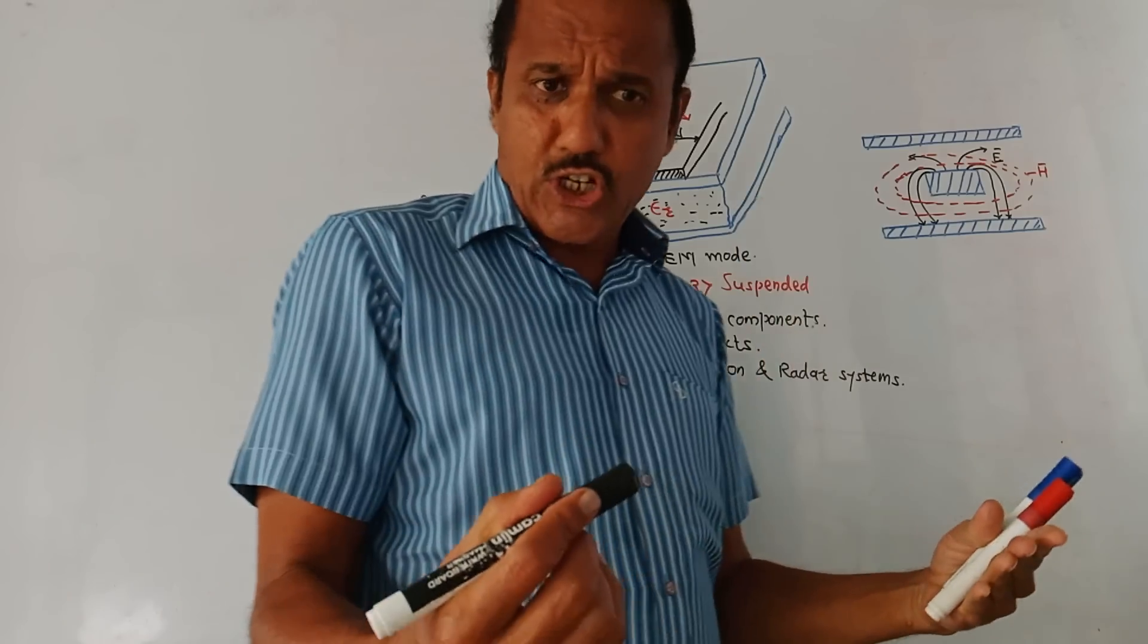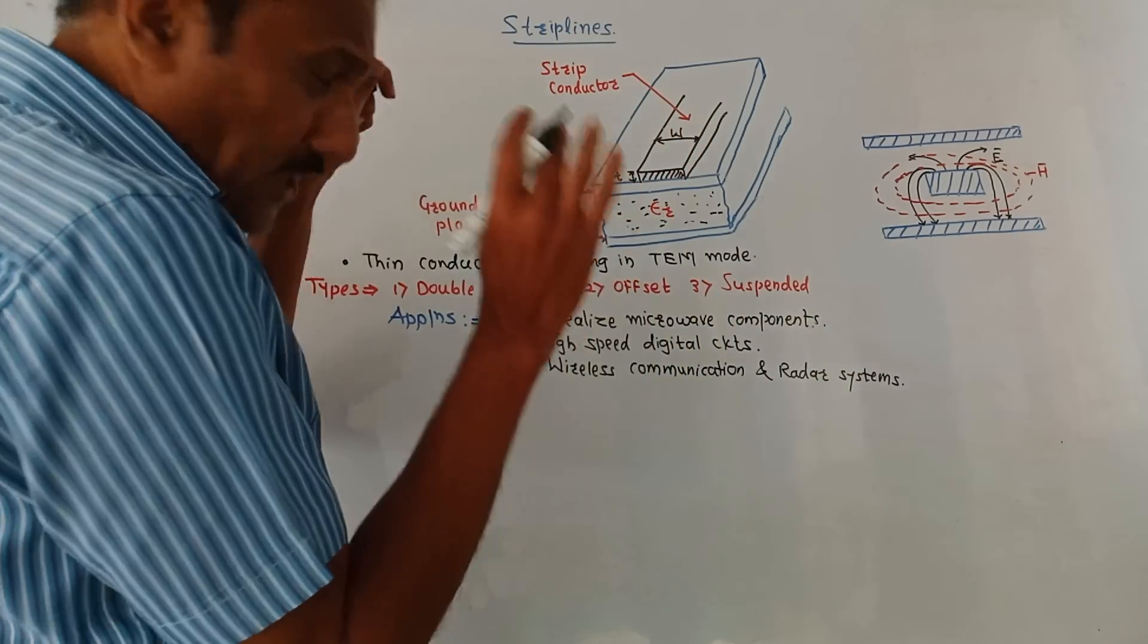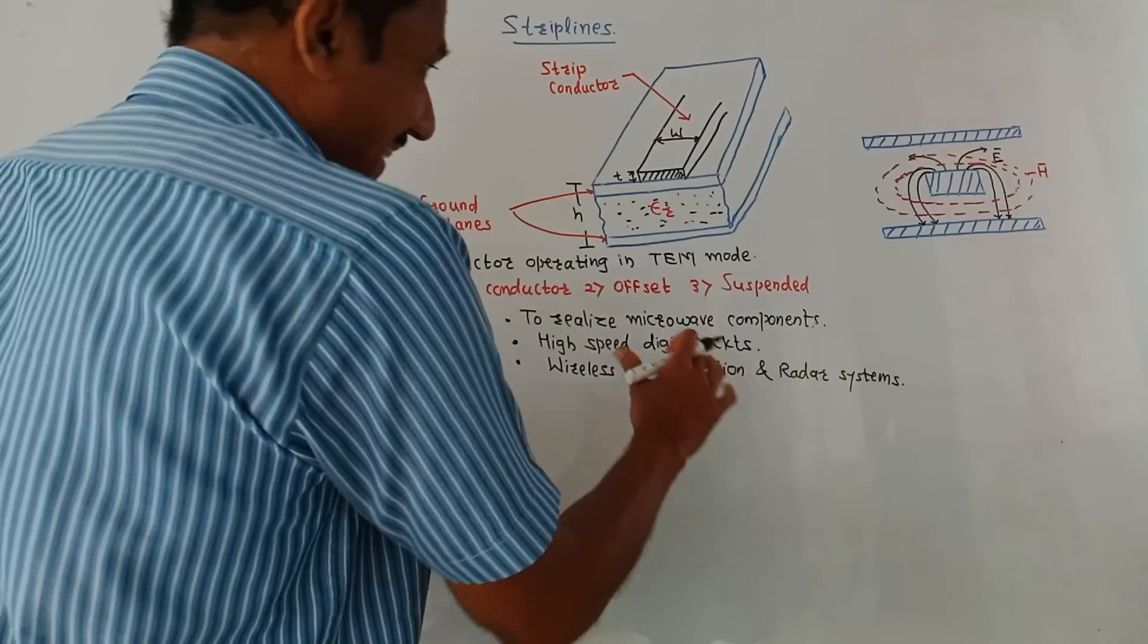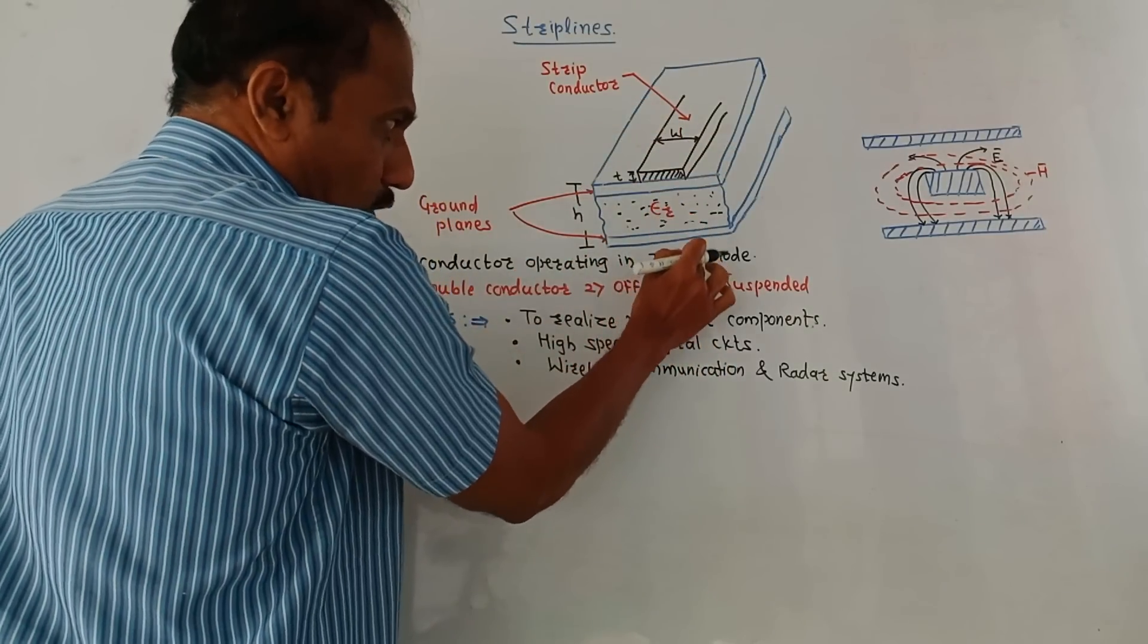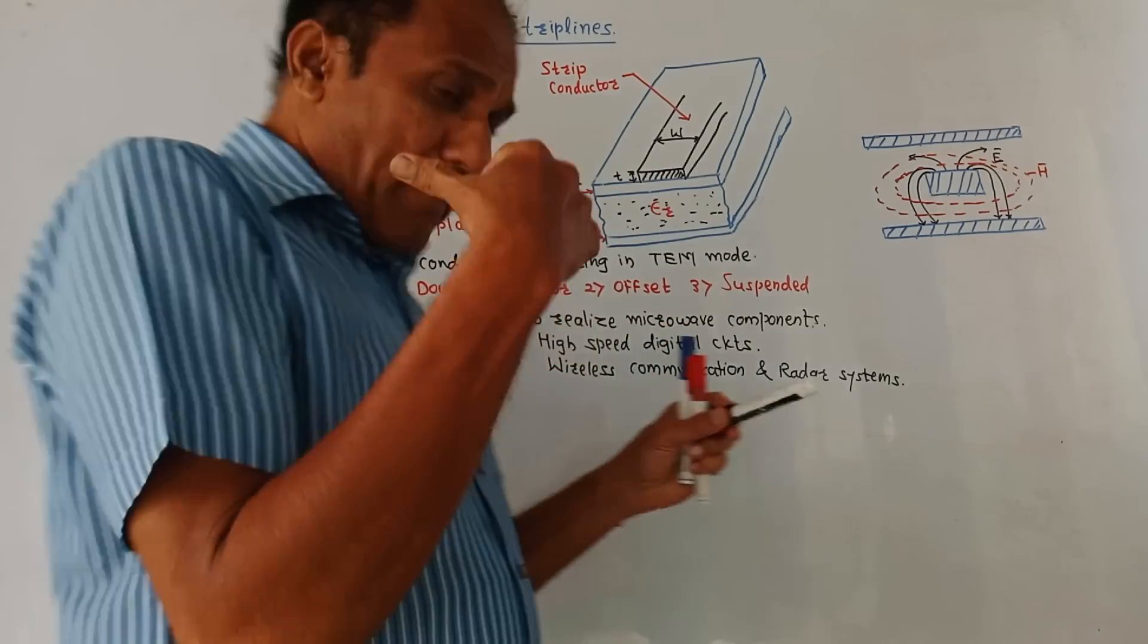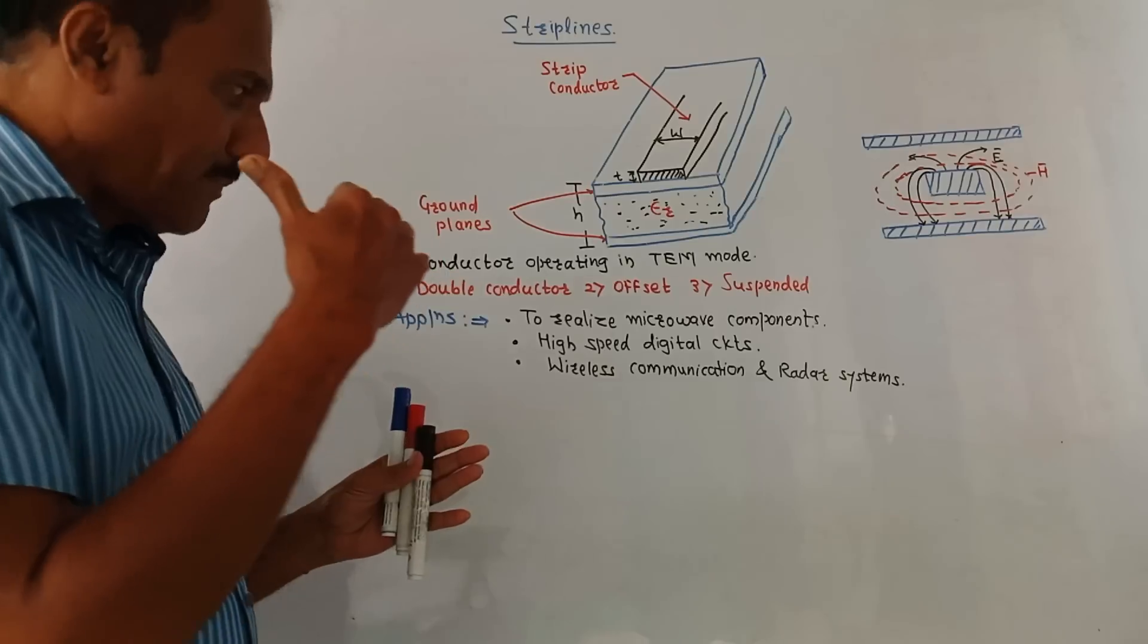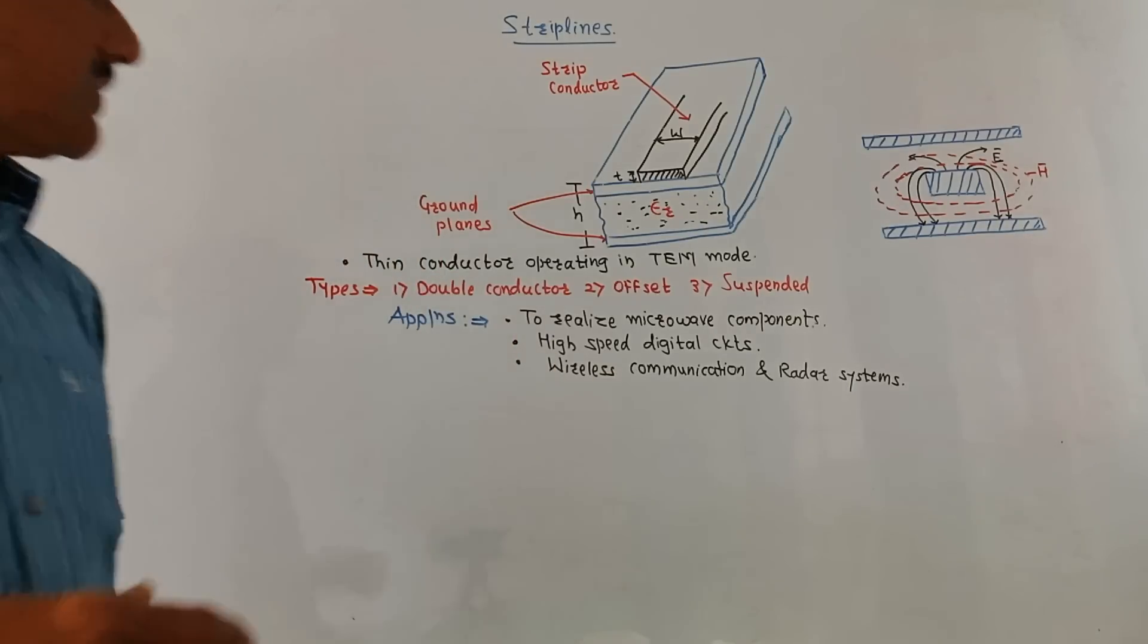There is one more variation as far as these strip lines are concerned, which is called micro strip line. In case of micro strip line, the structure is not symmetric. It is unsymmetric structure. In that case, this top ground plane is not present and bottom ground plane is connected to the ground. So these micro strip lines are basically manufactured by using automated technologies, and these micro strip lines are used in case of high speed digital circuits.